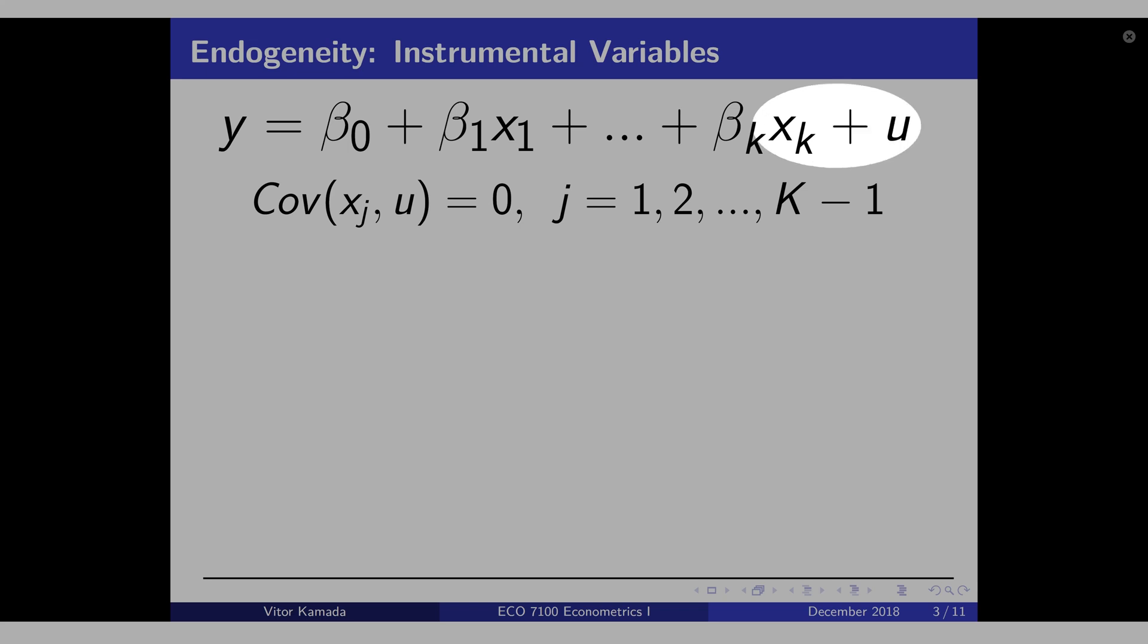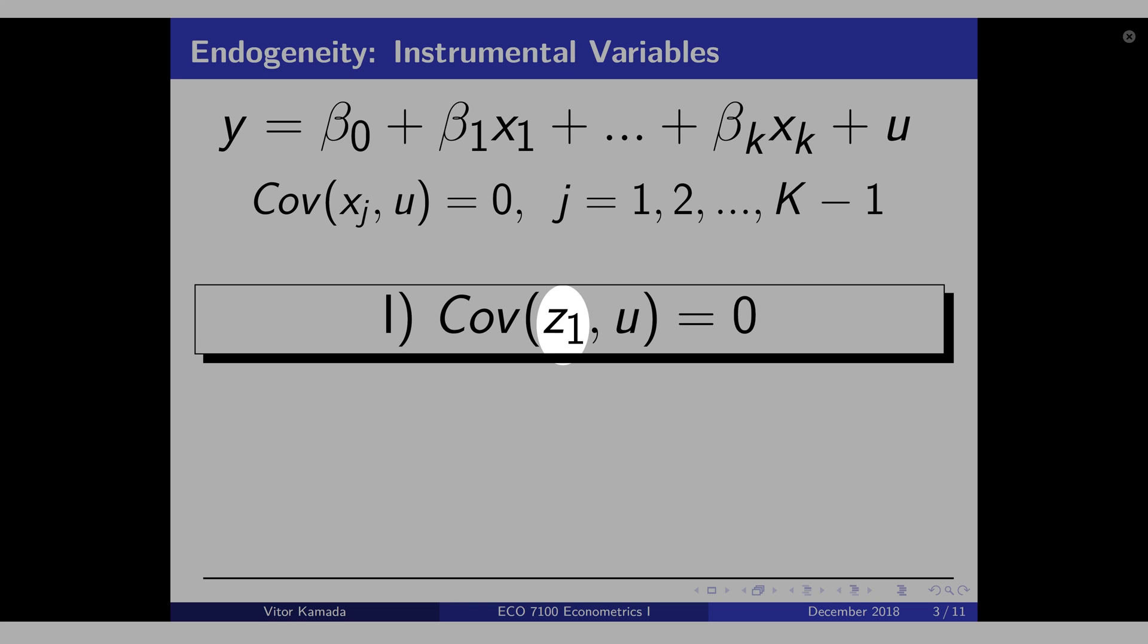What is the solution to get rid of this correlation here? You can come up with instrumental variable z1, and this z1 has to be uncorrelated with the error term. Additionally, z1 has to be correlated with xk.